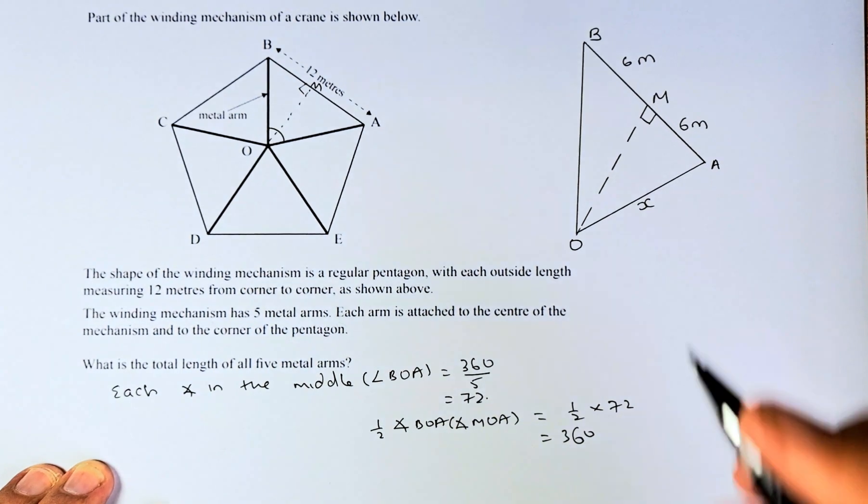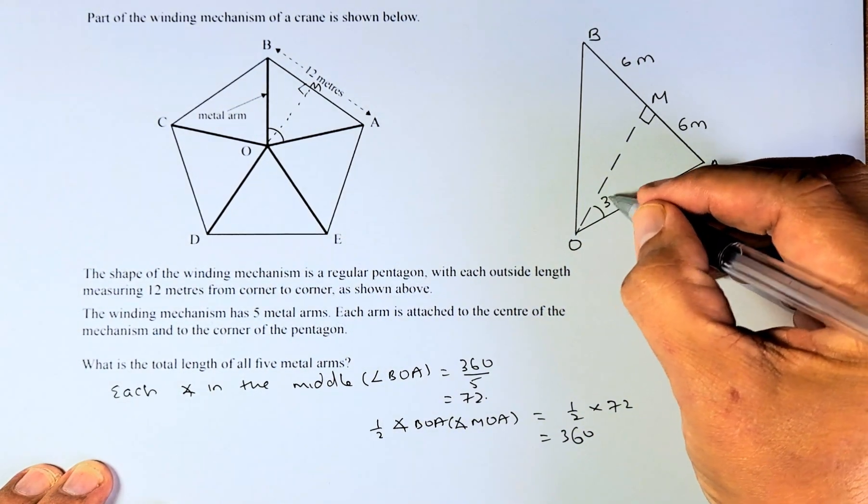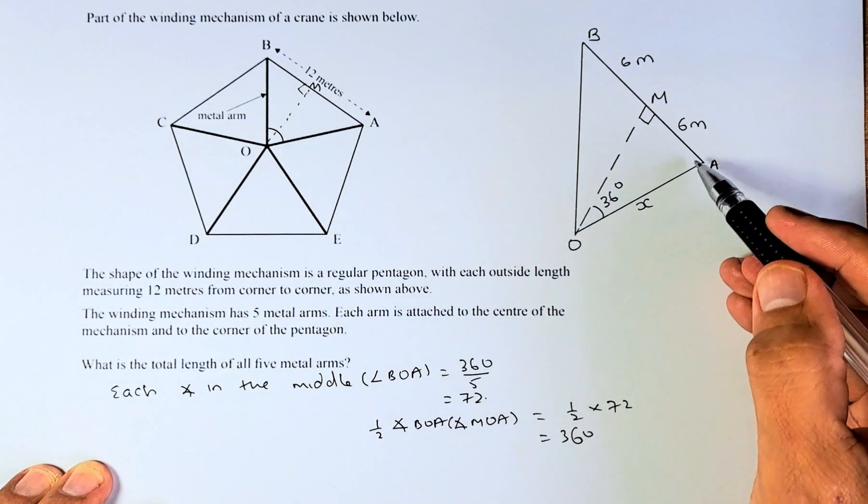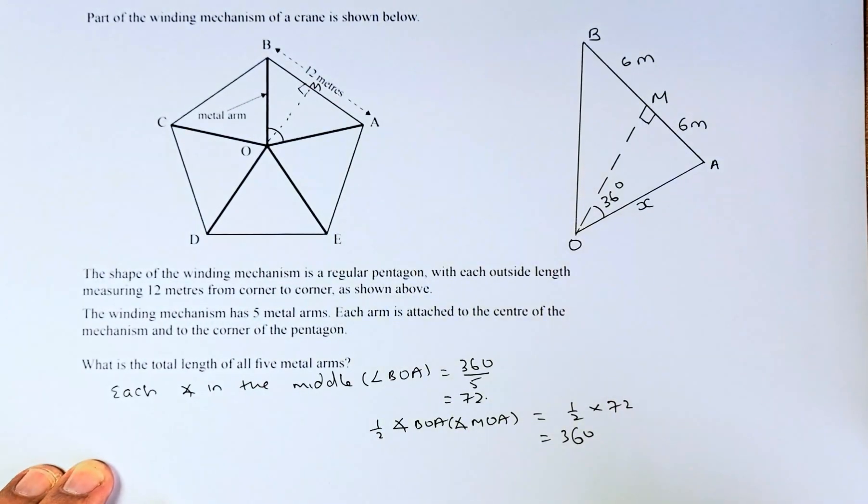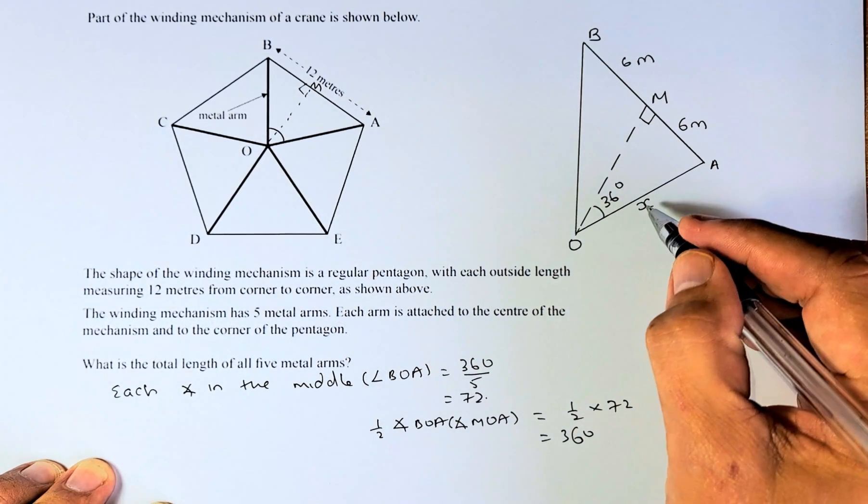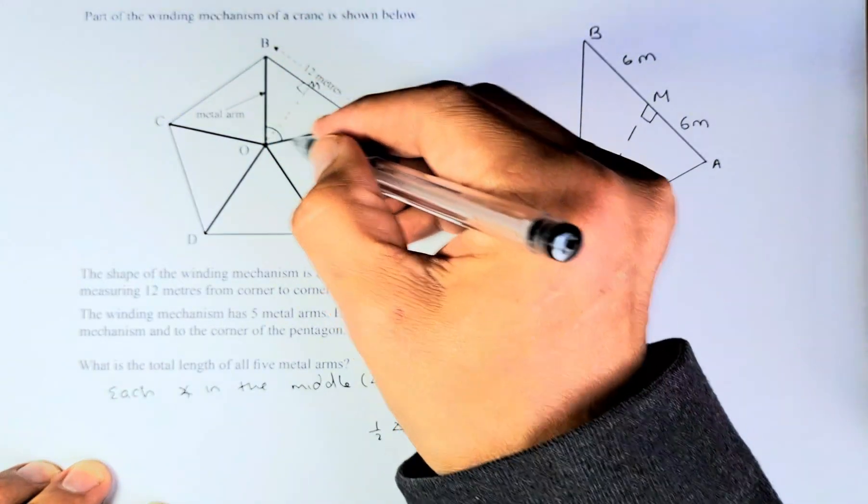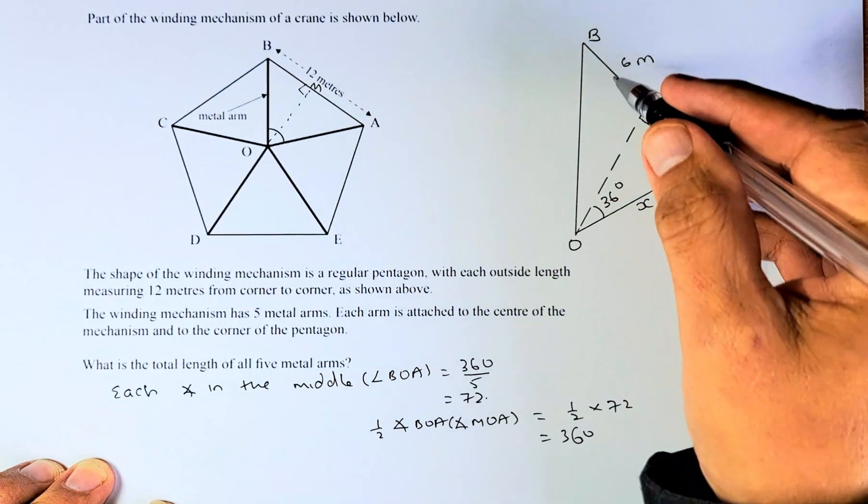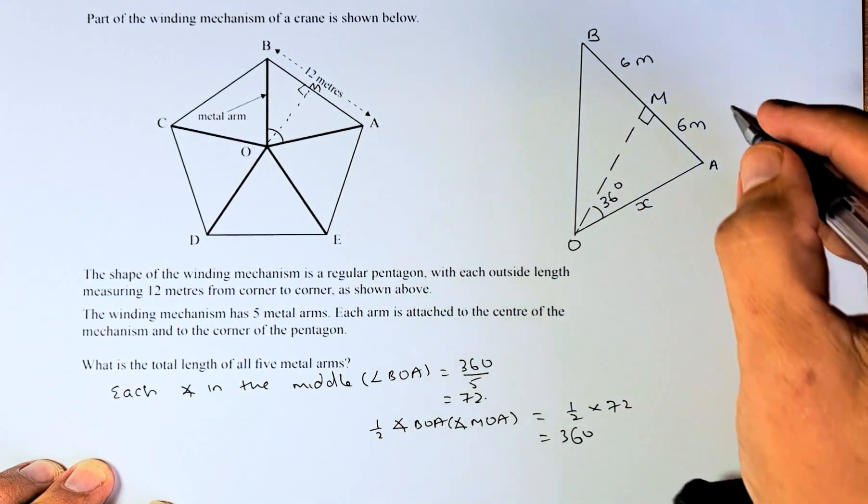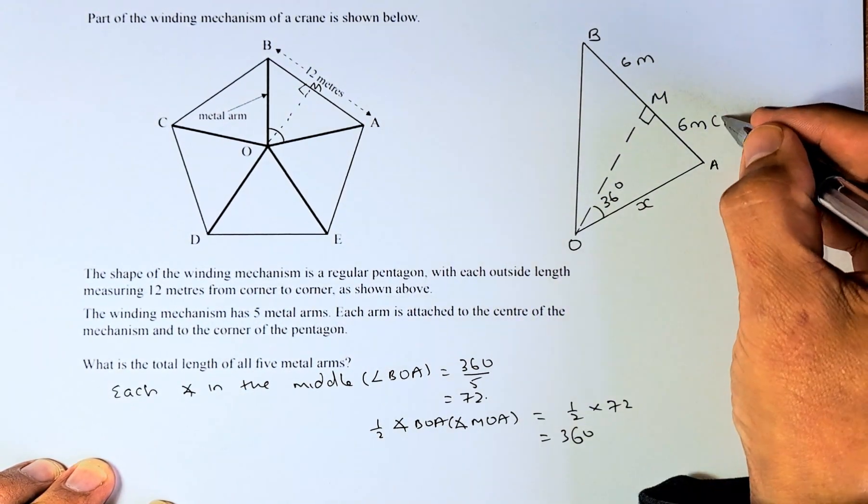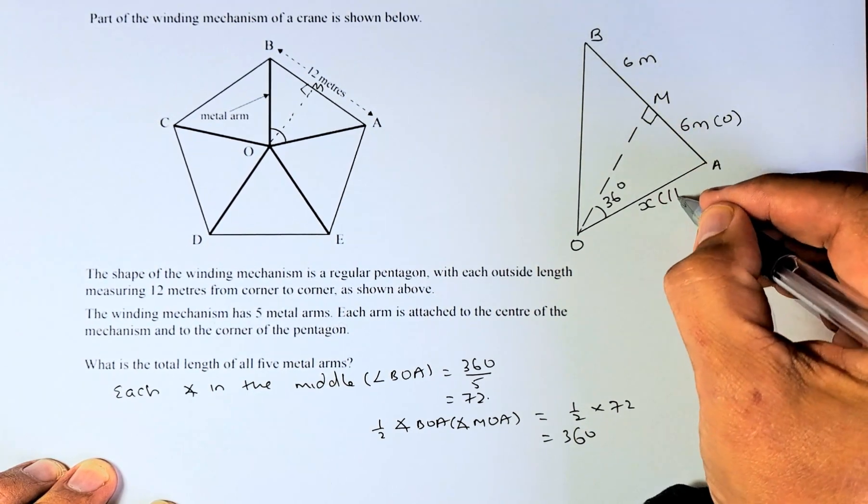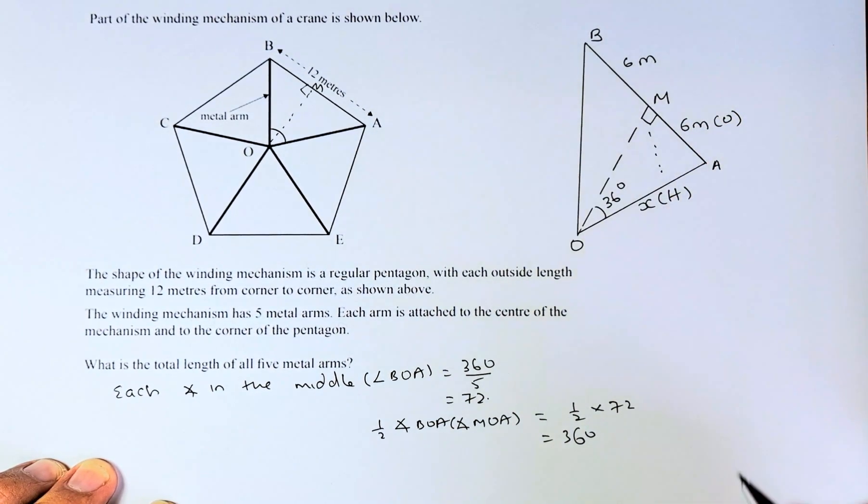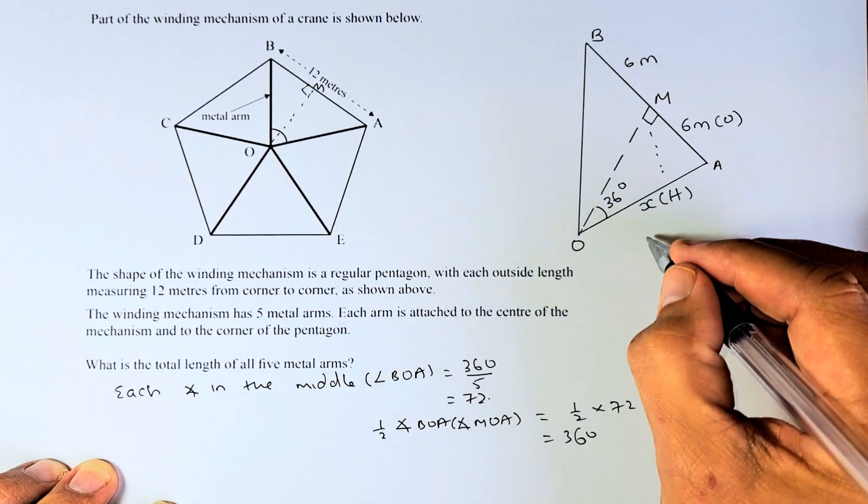So that angle there is going to be 36. So now we are going to find one length of OA. To get one length, then there are 5 of them. We multiply by 5, we should be able to solve it. So to find OA, we need to look at this triangle. So this is the same triangle as this, BOA. We are going to use one of them. So this is the angle, so this is the opposite. And this is the 90 degrees, so that must be the hypotenuse. Opposite 90 degrees is the hypotenuse. So we have to use sine theta.